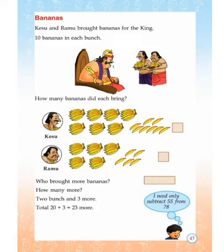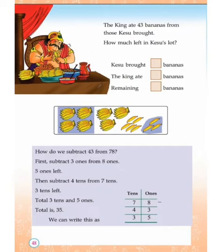How many more bananas did Keshu bring? Write the answer in that column. The king ate 43 bananas from the ones Keshu brought. Keshu brought 78 bananas and the king ate 43 bananas. We want to find the remaining bananas.